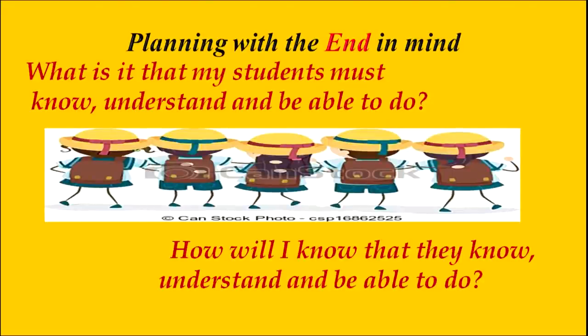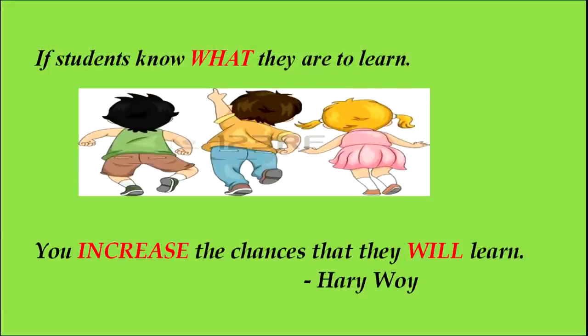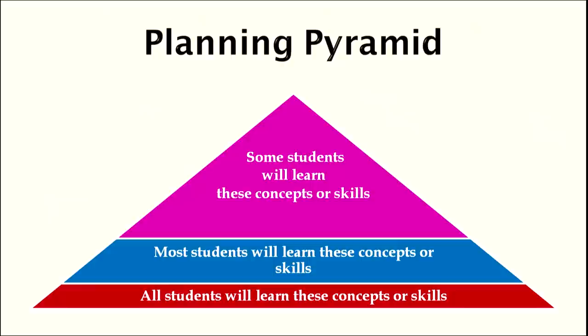When a teacher starts teaching, he plans with some end in mind — like: what is it that my students must know, understand, and be able to do? Or how will I know that they know, understand, and are able to do it? If students know what they are to learn, you increase the chances that they will learn. We will discuss about the planning pyramid. A teacher plans how students will learn — some students will learn certain concepts or skills, most students will, or all students will.